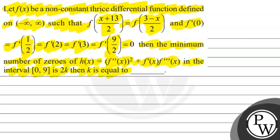Humare paas given hai ki f(x) humara known constant thrice differentiable function hai, defined on open interval (-∞, ∞), such that f((x+13)/2) = f((3-x)/2). Aur given hai ki f'(0) = f'(1/2) = f'(2) = f'(3) = f'(9/2) = 0. Minimum number of zeros of h(x) equals 2 times k, toh k kya hoga?